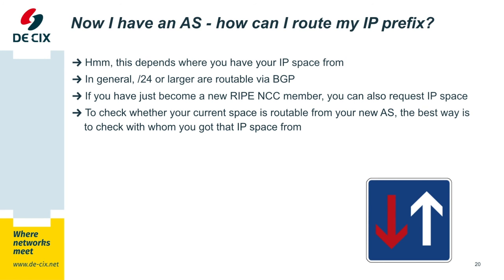So if you have your AS now, how can you route your IP prefixes? In general, everything /24 or larger is routable via BGP. Smaller ones are as well, but they might not be universally accepted by other parties. If you have just become a new RIPE NCC member, you can also request IPv4 and IPv6 space. If you already have IPv4 and/or IPv6 addresses and want to check if you can route them, check where you got that IP space from. If it's from another ISP, ask them if you are allowed to announce — otherwise you might have to give your current IP space back and renumber.